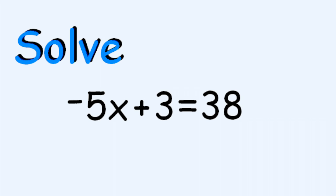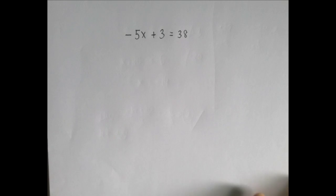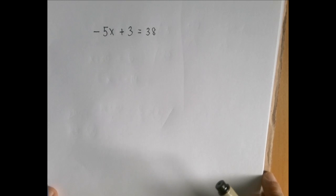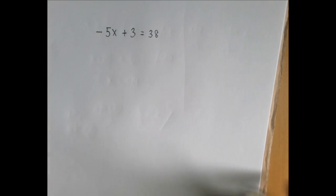This is a two-step equation. What happened to the unknown was first a multiplication by negative 5 and then addition of 3. We are going to solve this equation by undoing these two operations in the reverse order.